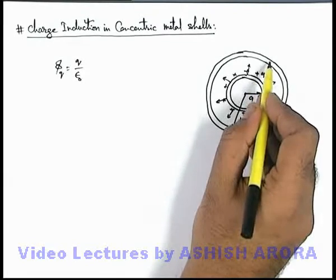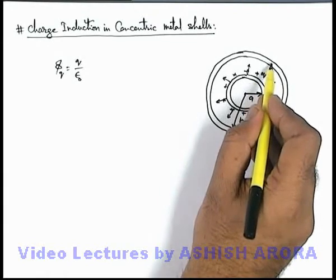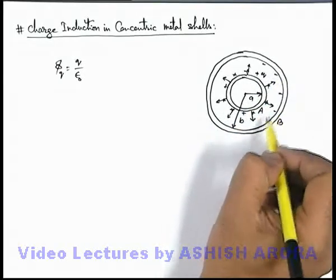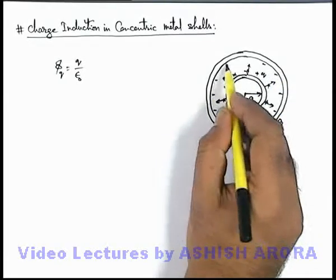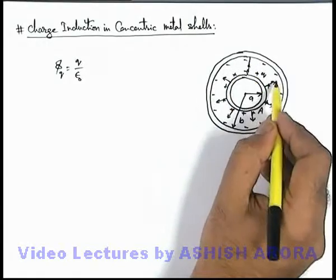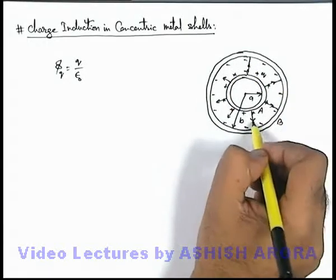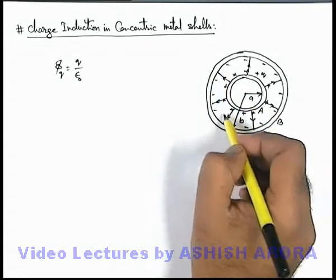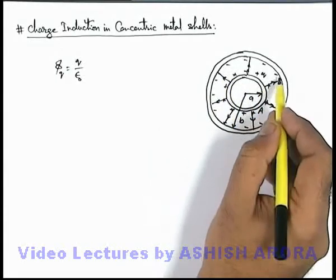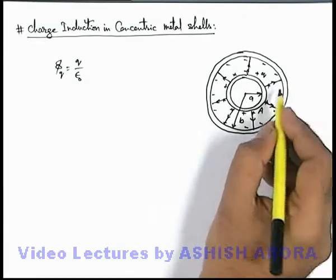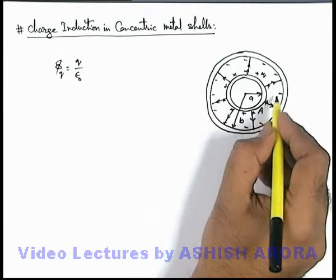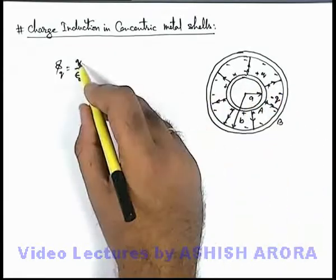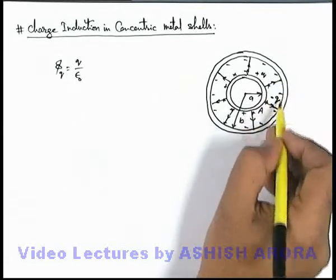Due to this positive charge, free electrons of shell B will be pulled inside and some negative charge will be induced on the inner surface of shell B, on which the flux will start terminating. Since no electric line can penetrate shell B, the whole flux will terminate on the inner surface of this shell. That means the total induced charge on the inner surface must be exactly equal to -Q, because the flux Q/ε₀ is being absorbed by this surface.